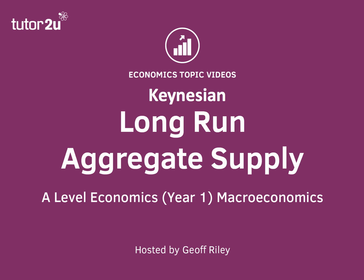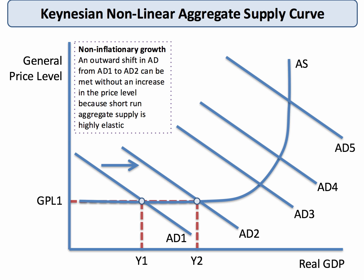Hi there. This is a quick short topic video looking at the Keynesian aggregate supply curve. The Keynesian aggregate supply curve is non-linear. The elasticity of the supply curve will change at different levels of national output. Let's work our way through it and see if it makes sense to you.